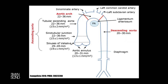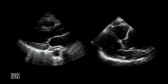In the thoracic aorta, the size that is considered abnormally enlarged is around four to four and a half centimeters. The size basically goes down as you get into the abdominal aorta. If you want to be super accurate, there are nomograms that correlate the body's surface area with the size of the aorta. However, most of us don't have the time to do this.